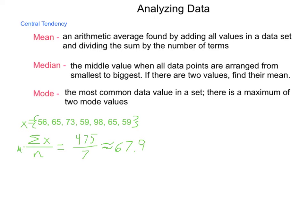Median. In order to find the median, we're going to need to take these data points and put them in order. So, doing that, we have 56, 59, 59, 65, 65, 73, 98. The middle value, since we have 7, 7 divided by 2 is 3 and a half. We add an extra half, and that gives us number 4. So, data points 1, 2, 3, and 4. Our median value is 65.